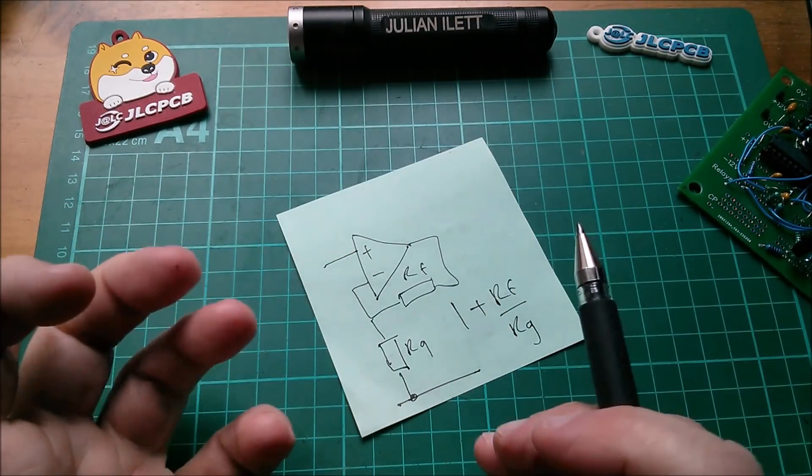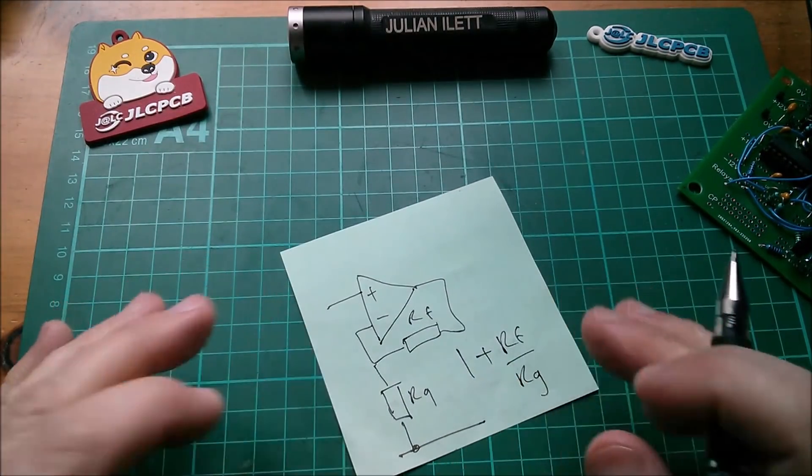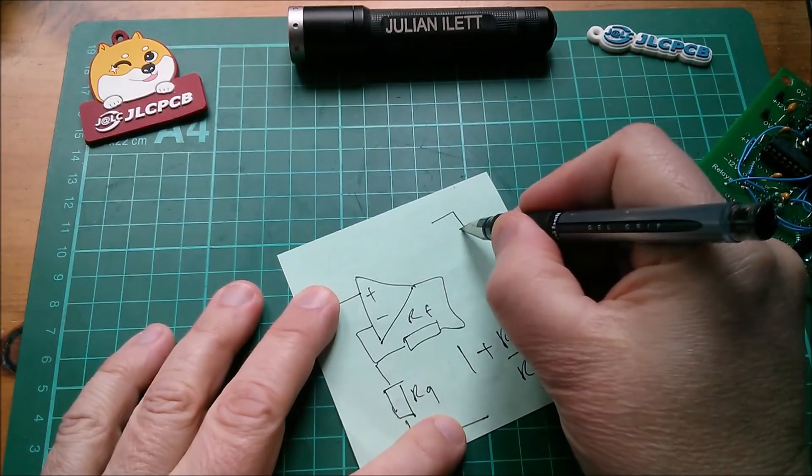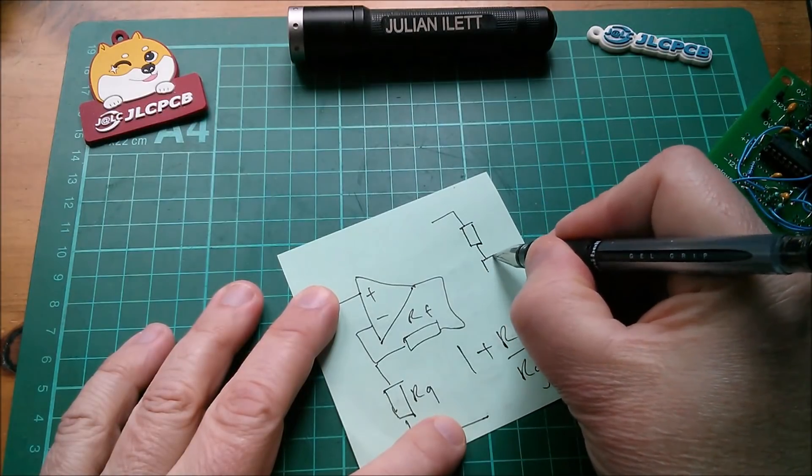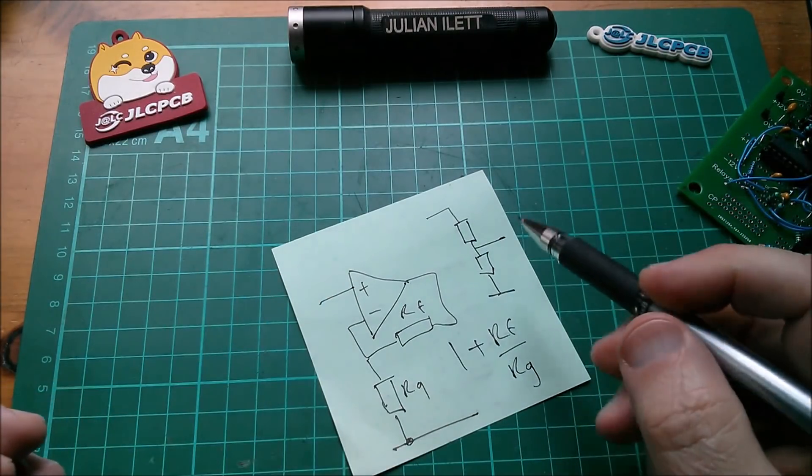In much the same way as a potential divider acts as a voltage reducer. If you're thinking, Julian, why are you bothering with an op-amp, why don't you just have a potential divider?